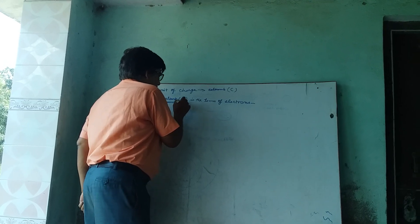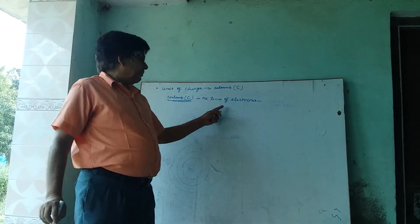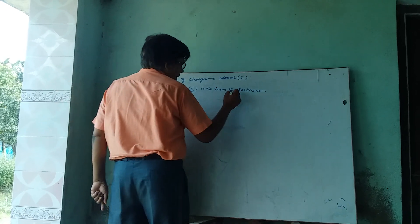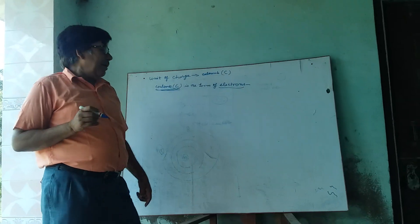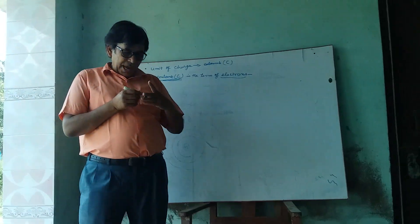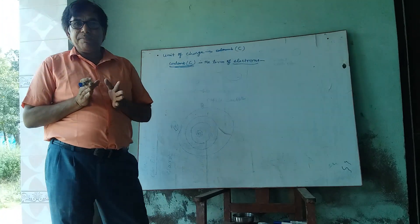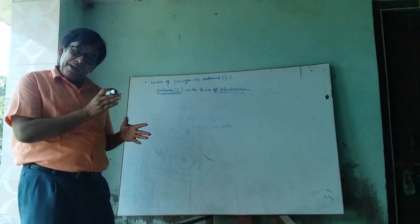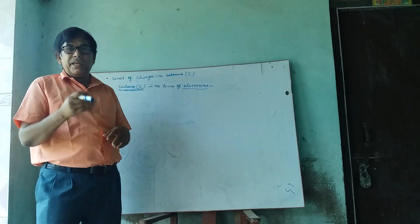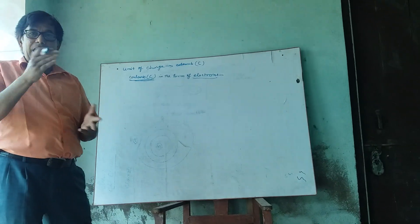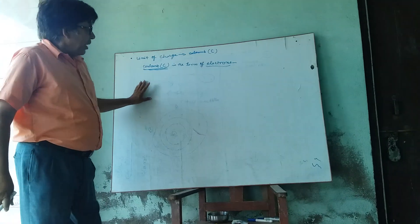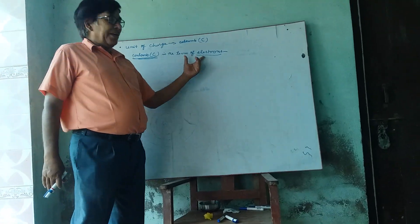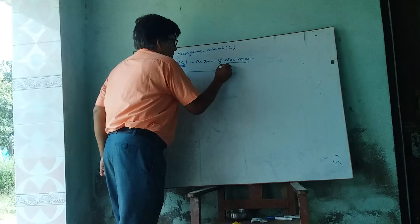Coulomb in terms of electrons. We know that electrons are negative particles which are free from atoms. They can move from one atom to another, and from one orbit to another orbit. Thus, we can express the Coulomb in terms of electrons.